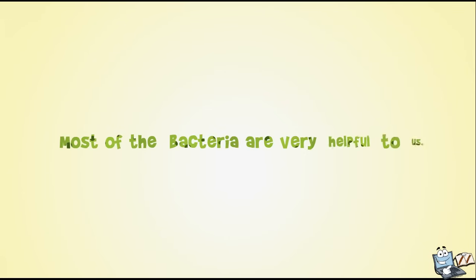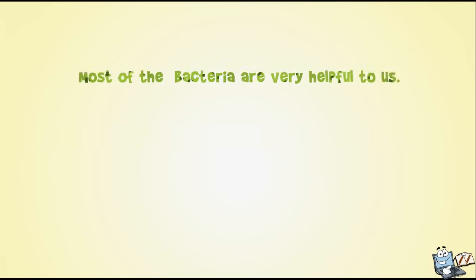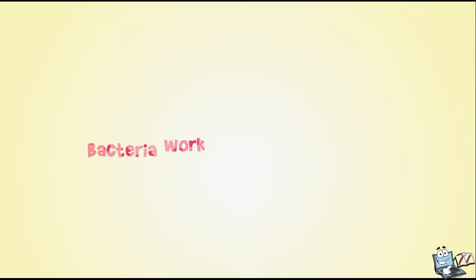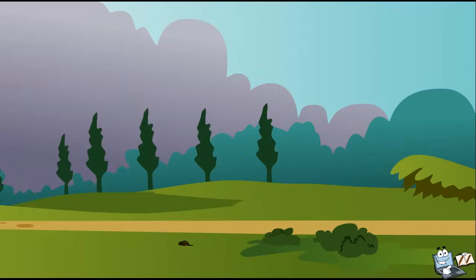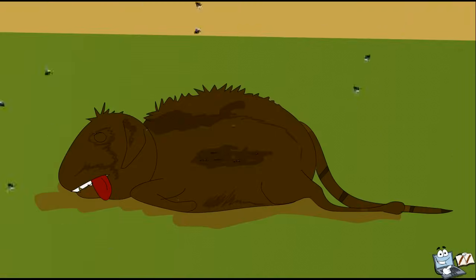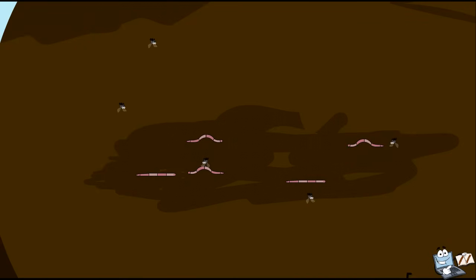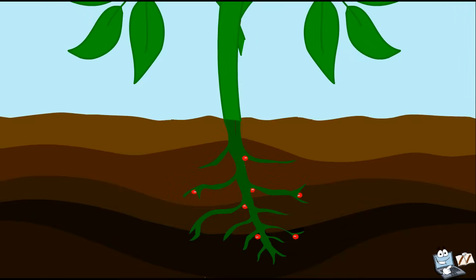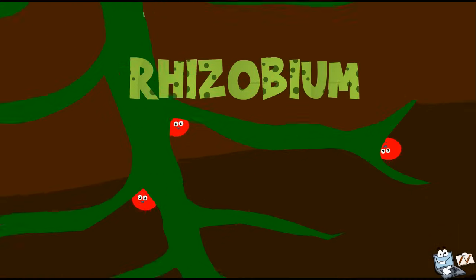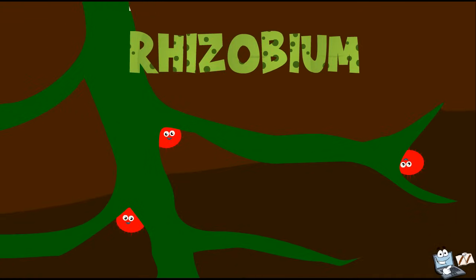Most of the bacteria are very helpful to us. They play an important role in the planet's ecosystem, as well as in human survival. Bacteria work hard in the soil for us. One type of bacteria, called decomposers, break down material from dead plants and animals. One more type of bacteria in the soil is rhizobium. It helps to fertilize the soil with nitrogen for plants to use when growing.